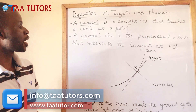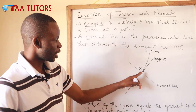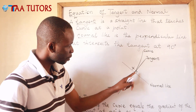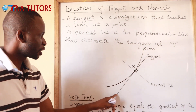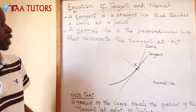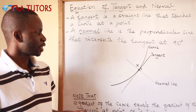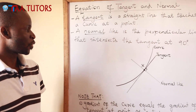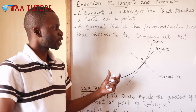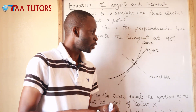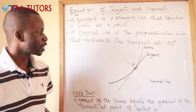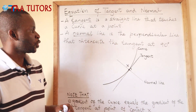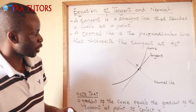A tangent is a line that touches a curve at a point. If this is my curve, this tangent is touching the curve at point x — this line here is our tangent. A normal line is a perpendicular line that intersects a tangent at 90 degrees. This lesson is not new — we learned straight lines before in Form 2, including how to get equations of straight lines and equations of perpendicular lines. We will borrow that concept and combine it with differentiation.